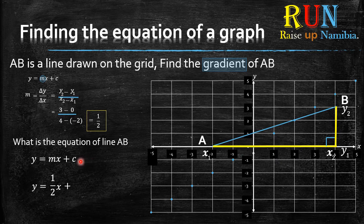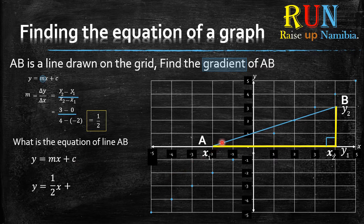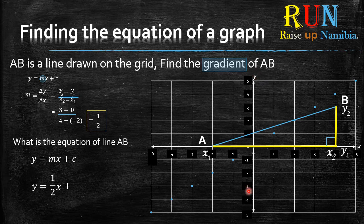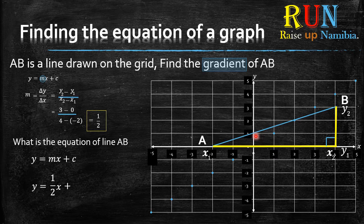Now what does y-intercept mean? When you look at your line, which is this blue line AB, where does that line cross the y-axis? The y-axis is this one, so it crosses that y-axis here, which means positive one. So you add a positive one there, and that's basically your final answer.